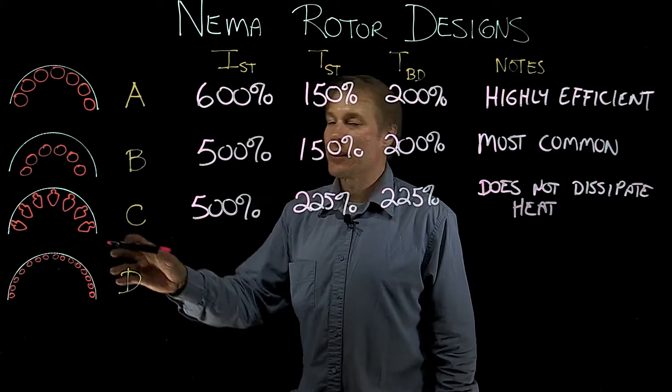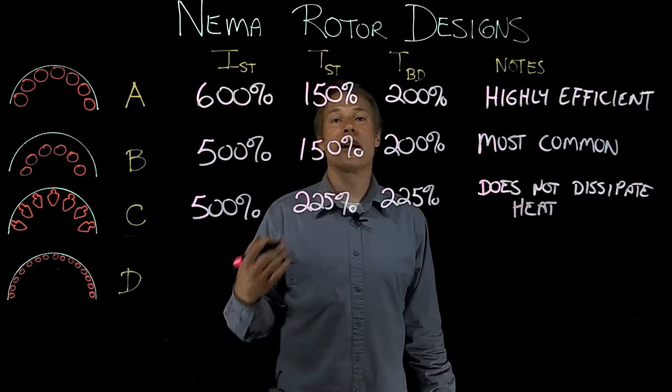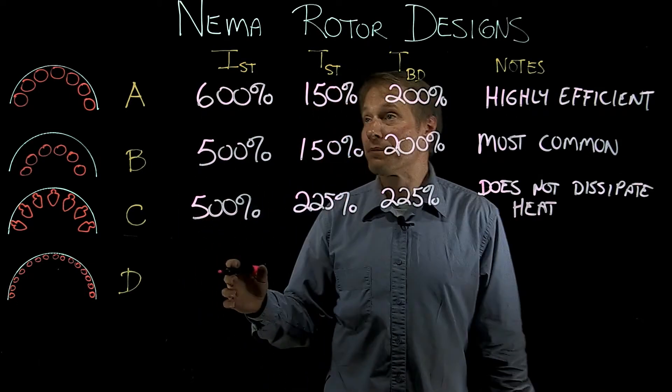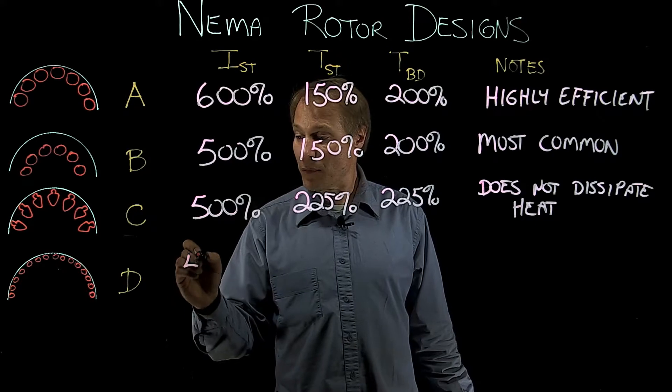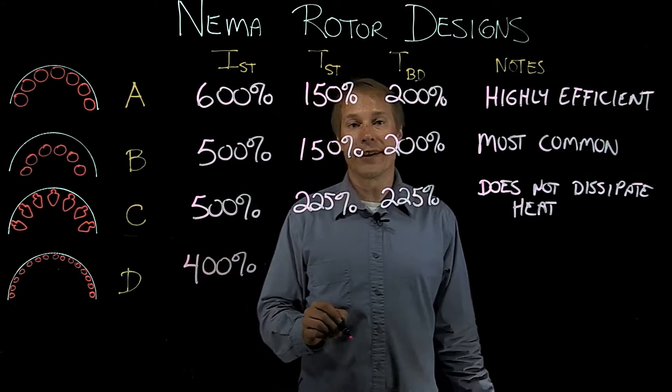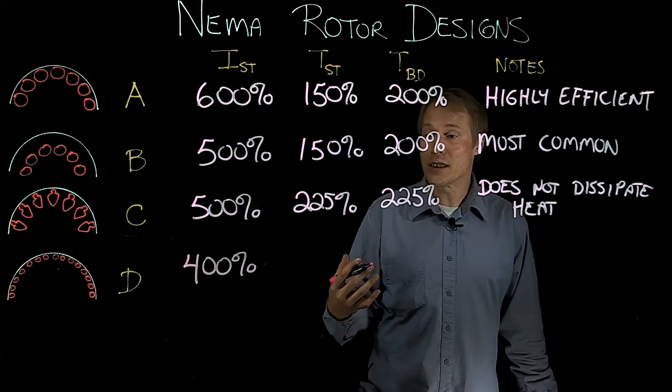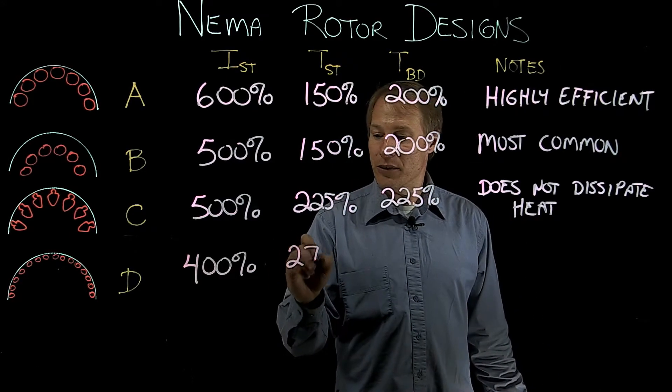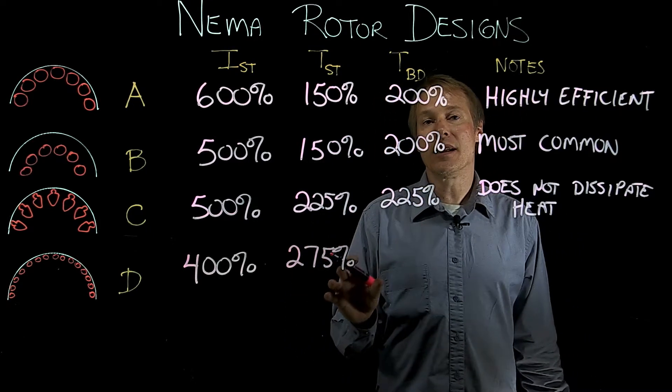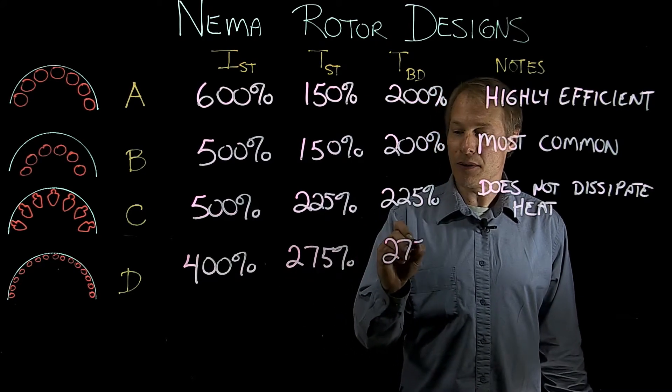And then finally, we've got the NEMA-D design. As you can see, the rotor bars are much smaller, which gives us higher resistance. So that'll make the starting current go down even more. So now we have, let's say, 400% of FLA. But the starting torque will be higher because now it's all resistive. And that'll be around 275%. And the breakdown torque for a NEMA-D is the same as the starting torque. So we're looking at 275% again.